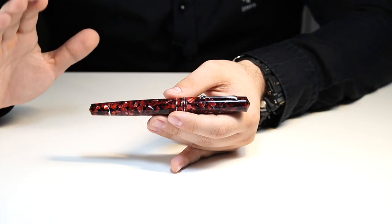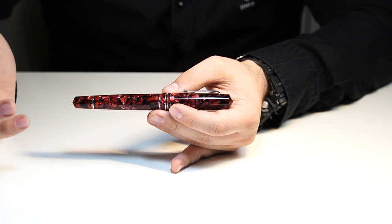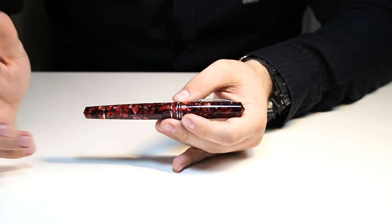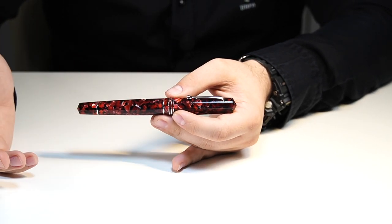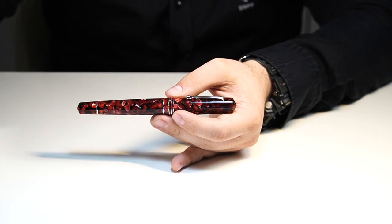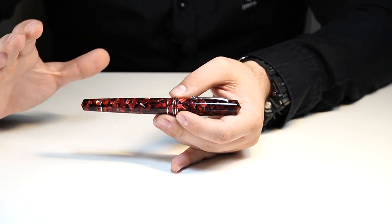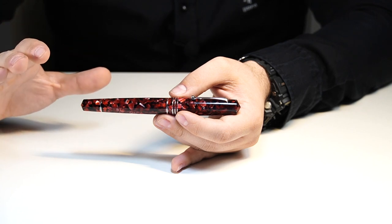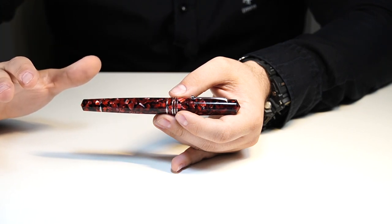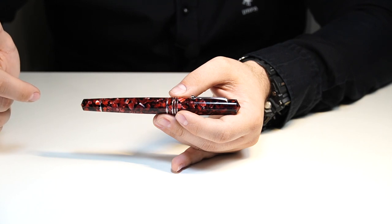So all these four colors is offered in both nib options, two nib materials. We have the harmonic steel nibs and the 14 karat gold nibs. Both have their own price range. As for steel, we have available extra fine, fine, medium, broad and stub. And for stub, we have two sizes, 1.1 and 1.5.